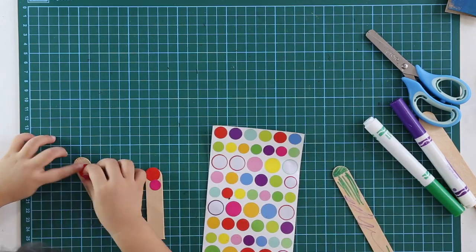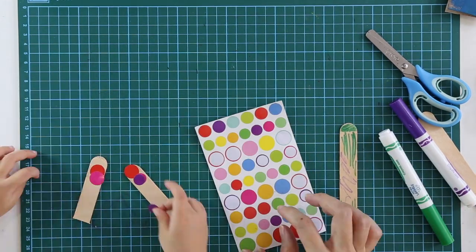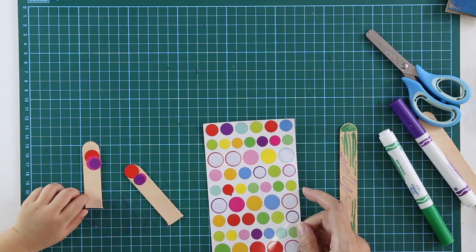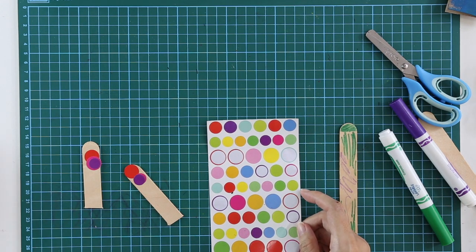For one stick, you can cut it into half. And then you can start to decorate it with markers or with stickers.